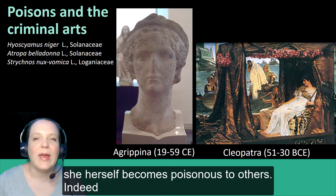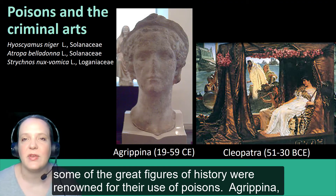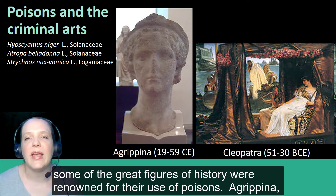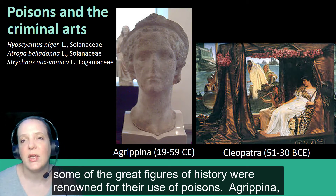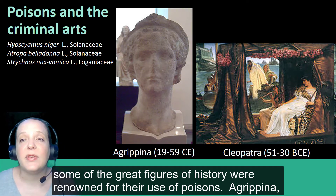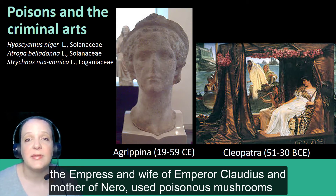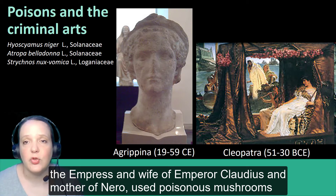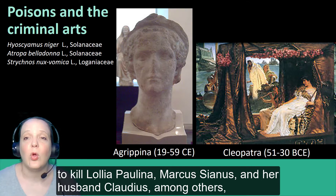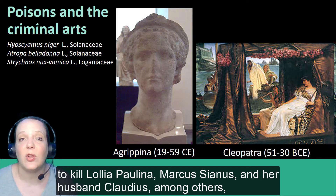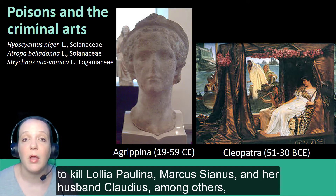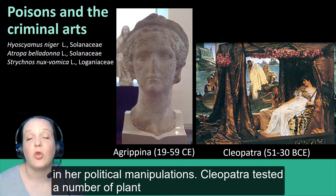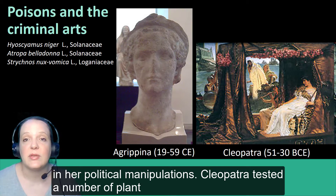Indeed, some of the great figures of history were renowned for their use of poisons. Agrippina, the empress and wife of Emperor Claudius and mother of Nero, used poisonous mushrooms to kill Lolia Paulina, Marcus Silanus, and her husband Claudius, among others, in her political manipulations.